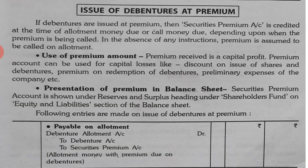The first topic of the day is Issue of Debentures at Premium. Just like when Shares are issued at Premium, Debentures can also be issued at Premium. In this regard, Security Premium Account is credited at the time of Allotment when money is due, or if it is called on any of the calls, then when Call Money is due, Security Premium Account is credited.